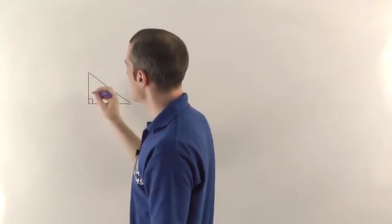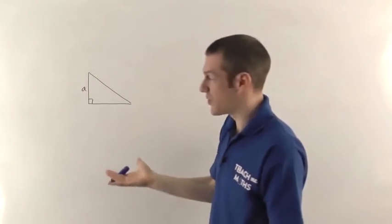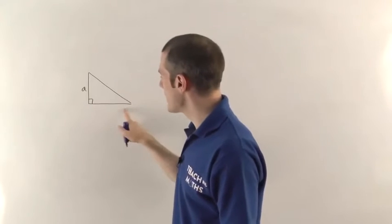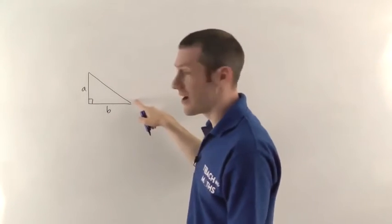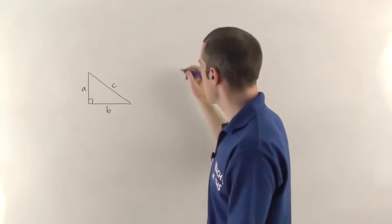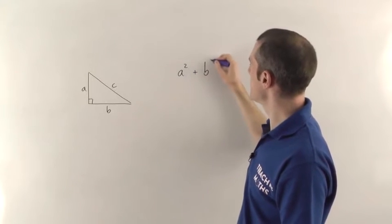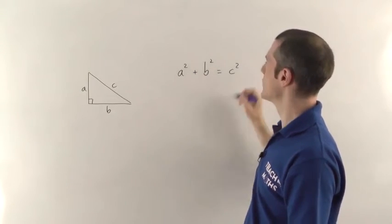So if the length of this side had a length of a, so a is just some number we don't know what it is yet, the width of the triangle is b, and the length of the hypotenuse, the longest side is c, then you'll sometimes see Pythagoras' theorem written as a squared plus b squared equals c squared.